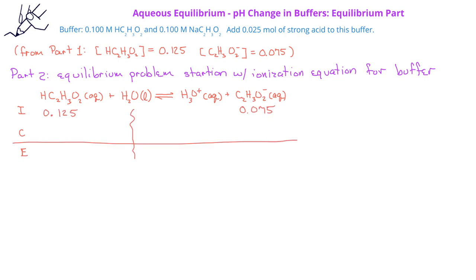Therefore, for the initial amount of the acetic acid we have 0.125 moles, for the hydronium ion we have 0, and for the acetate ion we have 0.075 moles. The acetic acid will decrease by x, the hydronium will increase by x, and the acetate ion will increase by x in this equilibrium system. At equilibrium, we have a concentration of acetic acid of 0.125 minus x, but since x is small, we'll assume that amount at equilibrium is 0.125 moles. For the hydronium ion we'll have an equilibrium concentration of x, and for the acetate ion we'll have an equilibrium concentration of 0.075 plus x, or assuming x is small, 0.075.